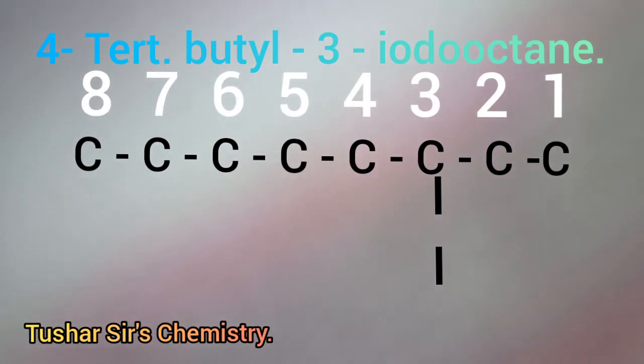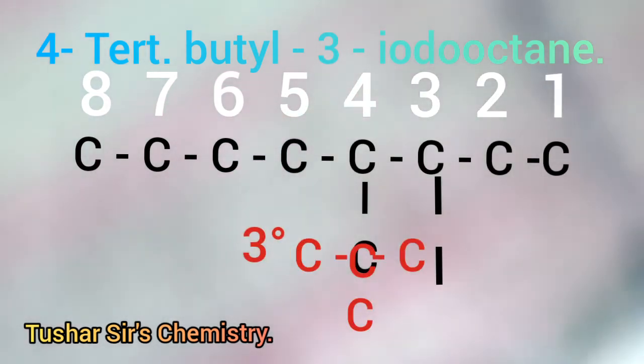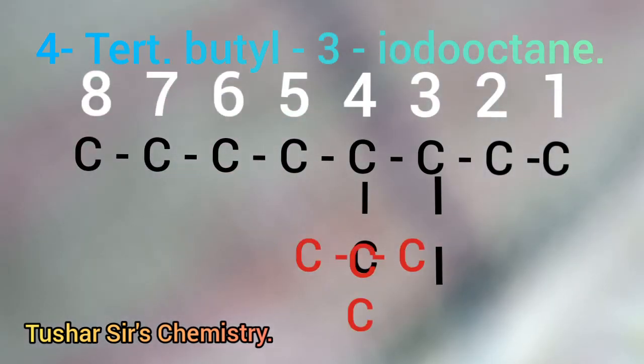To write tert-butyl, first we have to write a carbon atom at four position. To make it tertiary carbon, we have to write three carbon atoms on three different sides. As it contains four carbon atoms, so it is a butyl group.